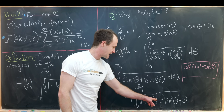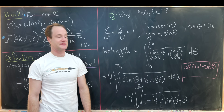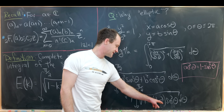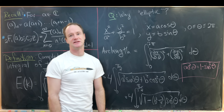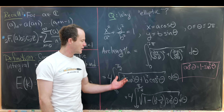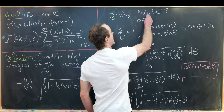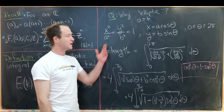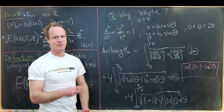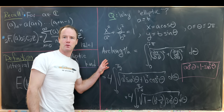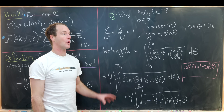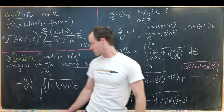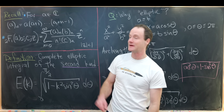Now if we let k² = b² - a², then we have exactly this integral. You might ask what happens if a is bigger than b and we get something negative, but we can assume from the beginning that a ≤ b and switch the roles of a and b as needed, since that just corresponds to a rotation in the xy-plane. That's a quick description of why this is called an elliptic integral.